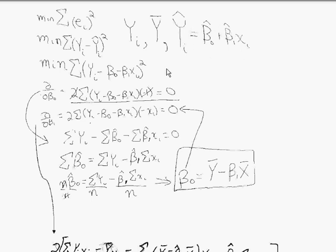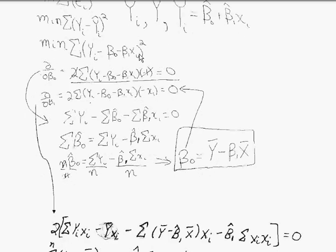Substitute that in for y-hat. Technically I should have hats on these, but I'm a little sloppy in this derivation. How are we going to minimize? We're going to choose the y-intercept and the slope that minimize this function. To minimize a function, you need to take a derivative and set it equal to zero. We're just going to hope that it's a minimum. We need to take two derivatives since we have two things we're minimizing this equation with respect to: the slope and the y-intercept.